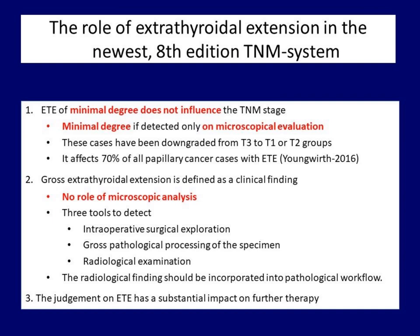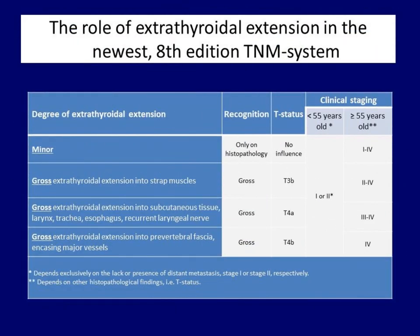Let's see the main table of the TNM staging. Please focus on the left column. The basic distinction is the minor and the gross extrathyroidal extension. The latter has three degrees according to the anatomical structure invaded. As we go down in the first column, the degree of extrathyroidal spread increases. The microscopic analysis has a role only in the finding of minimal extension.